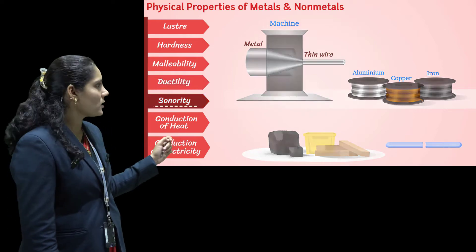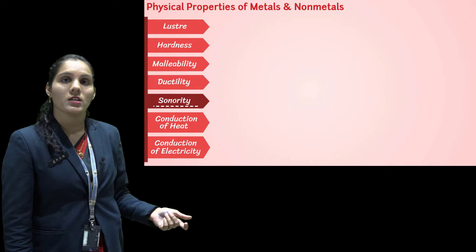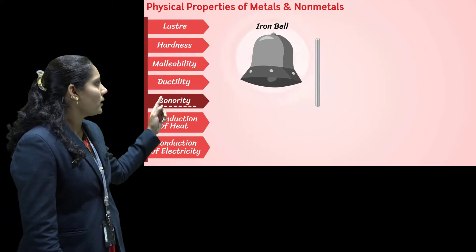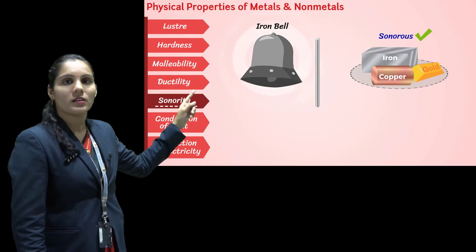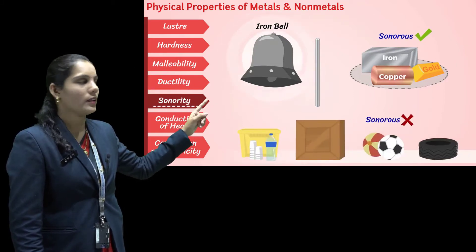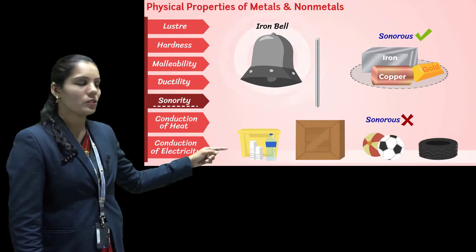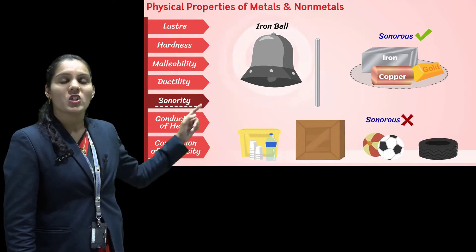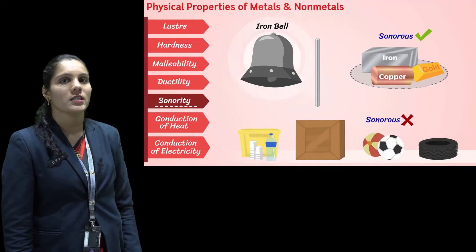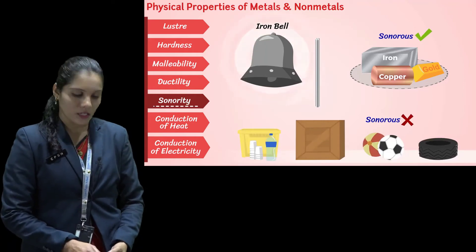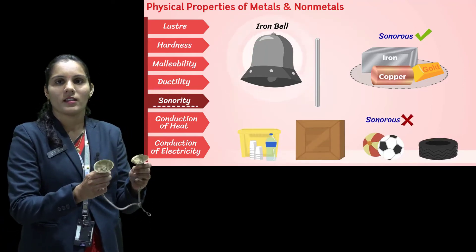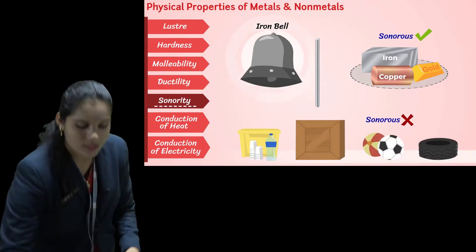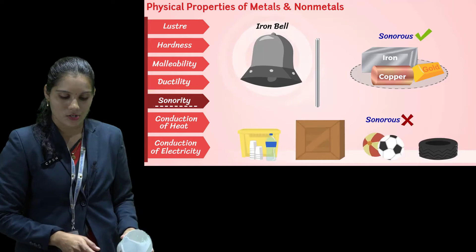The next property of metals is sonority. Sonority means the ability to produce a specific sound — 'sono' means sound. Here I have a ringing bell. If I ring it, we can hear the sound from it. But if I try to produce sound from non-metals, we cannot. So metals are sonorous in nature and non-metals are non-sonorous in nature. The metal object here can produce sound, which confirms metals are sonorous.